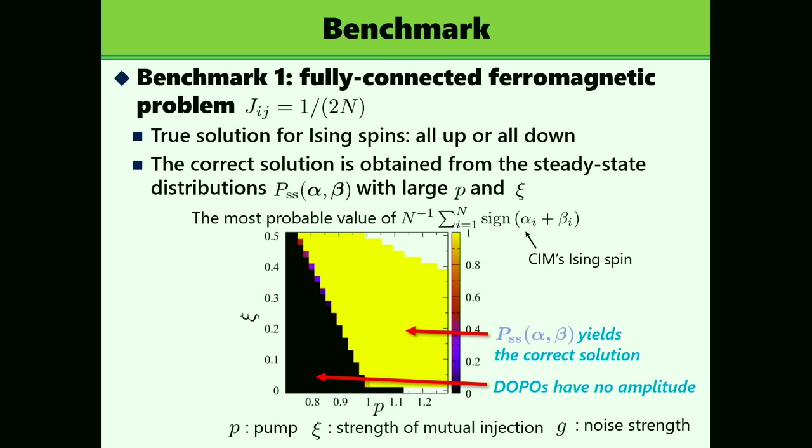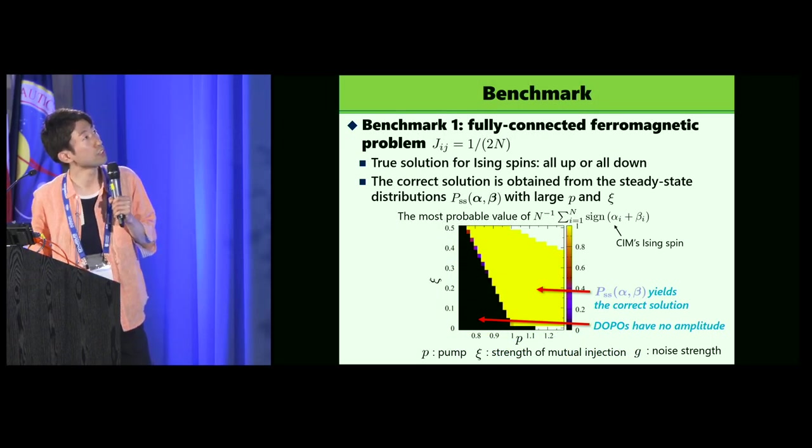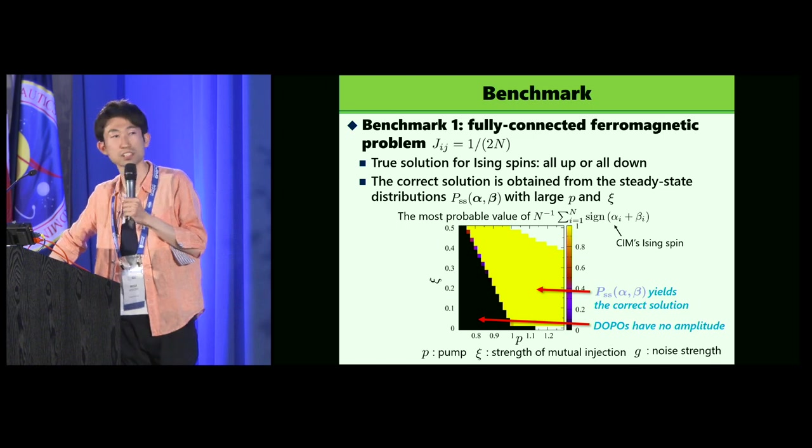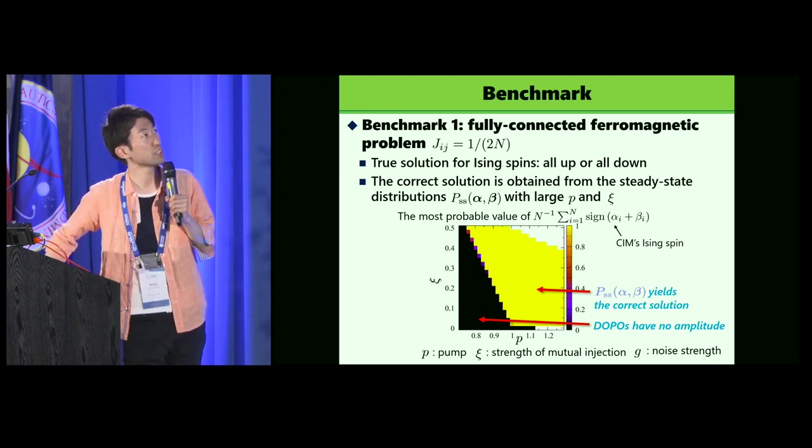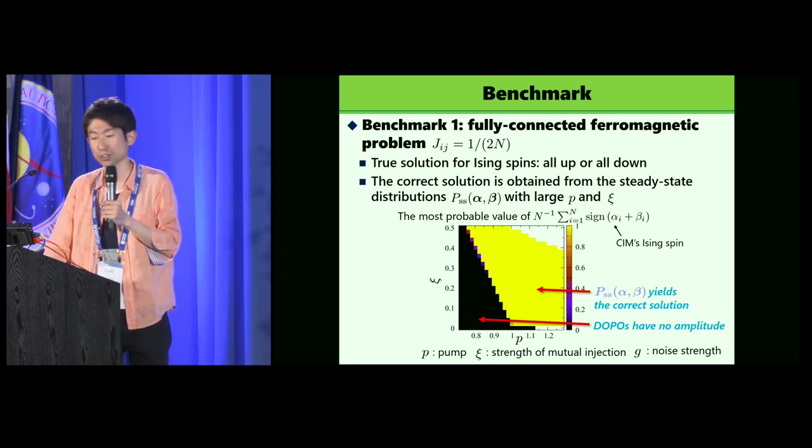The first benchmark is a very non-trivial one, a very simple one. Fully-connected ferromagnetic program where G_ij, the coupling constant of Ising spin G_ij is equal to 1 over 2N, positive and uniform. You know, the true solution for Ising spins of that problem is all up or all down. The figure shows the most probable value of the average of sign of alpha plus beta, and sign of alpha plus beta correspond to CIM's Ising spin.